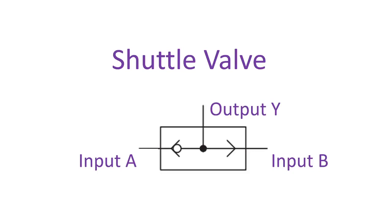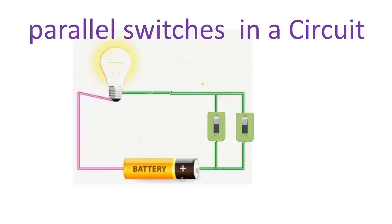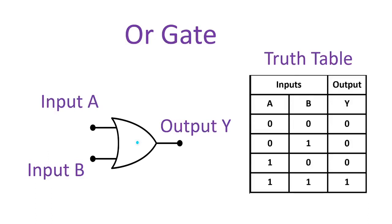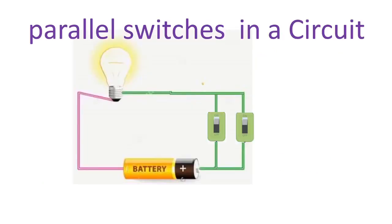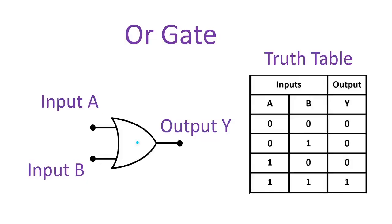For shuttle valves, they work on the same principle as a parallel circuit and OR gate logic. The output of the shuttle valve is true if either of the two inputs are true. In the equivalent parallel circuit, the bulb will glow if either of the two push buttons are pressed, or both pressed together. The OR gate output is true if either of the two inputs are true, otherwise it's false.